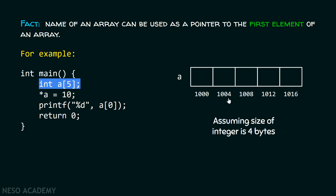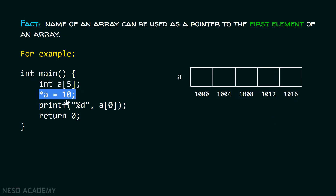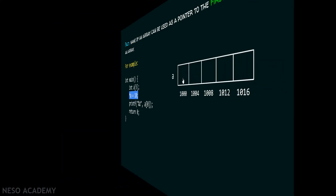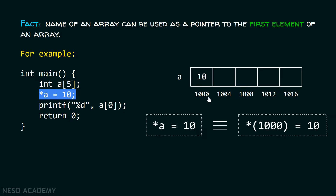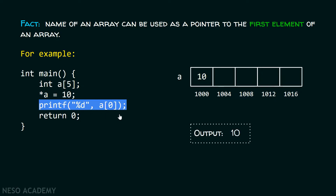Therefore the address next to 1000 will be 1004, the address next to 1004 will be 1008, and so on. In the next statement, I am trying to assign value 10 to this particular location. 'a' represents the base address of the array, that is 1000. So we can replace the array name with address 1000, and with the help of the dereference operator, I can go inside this location and store value 10. With the help of printf, I can print the output which is 10.